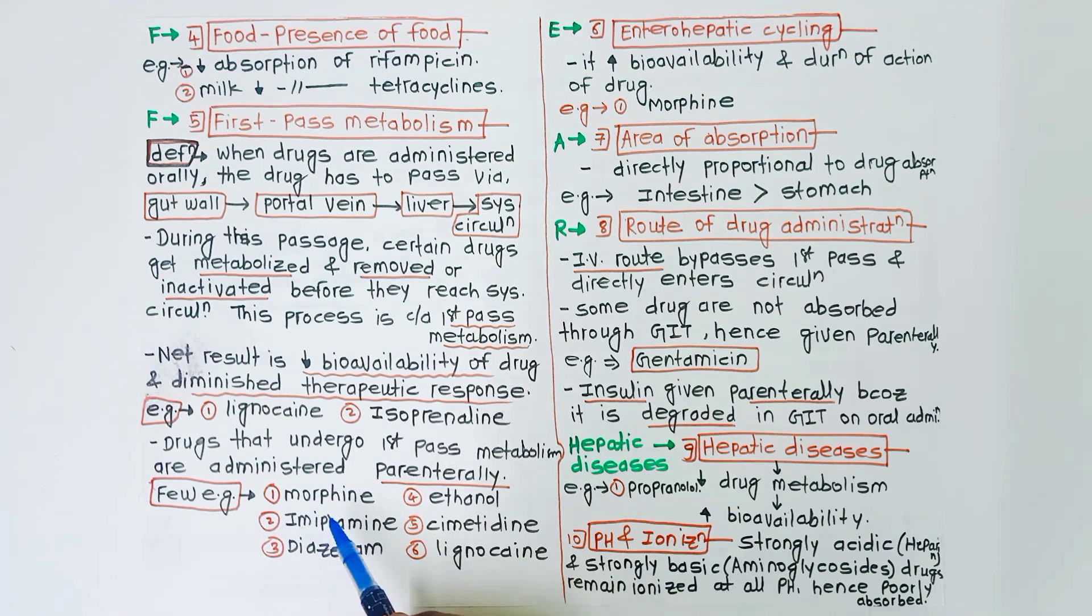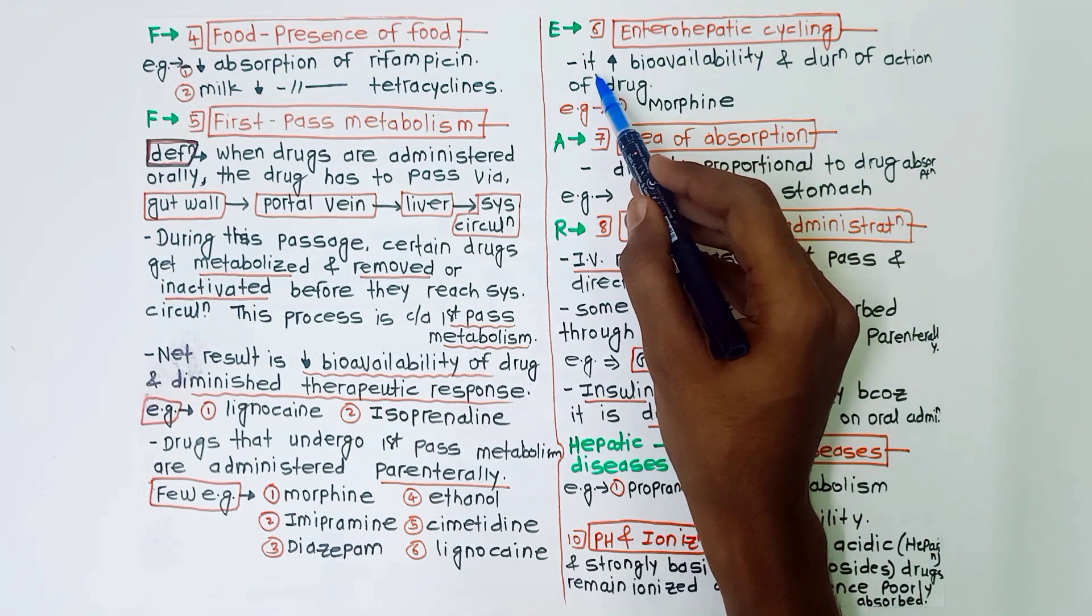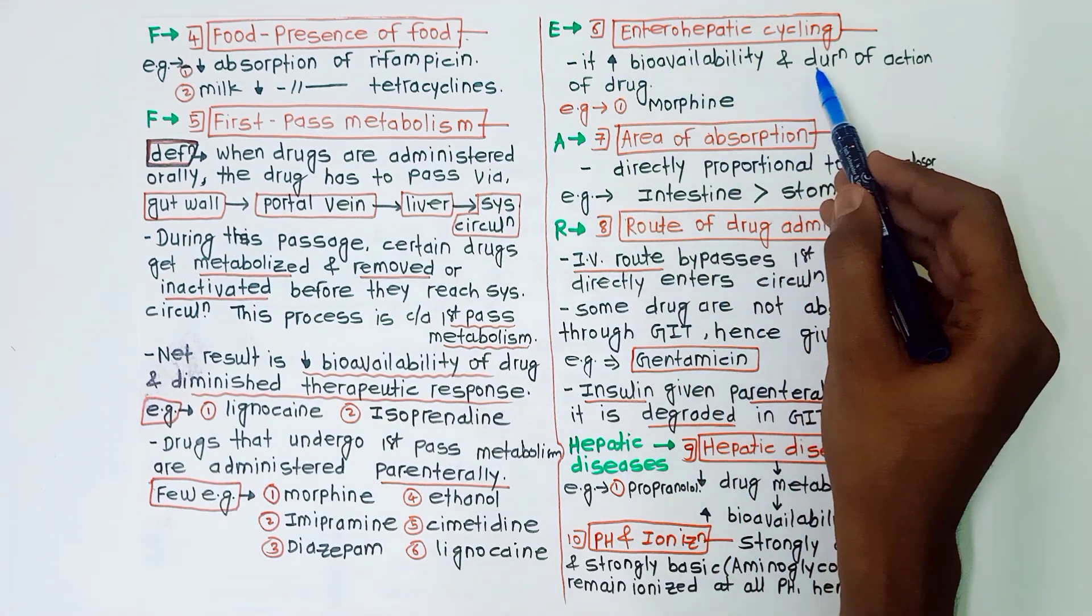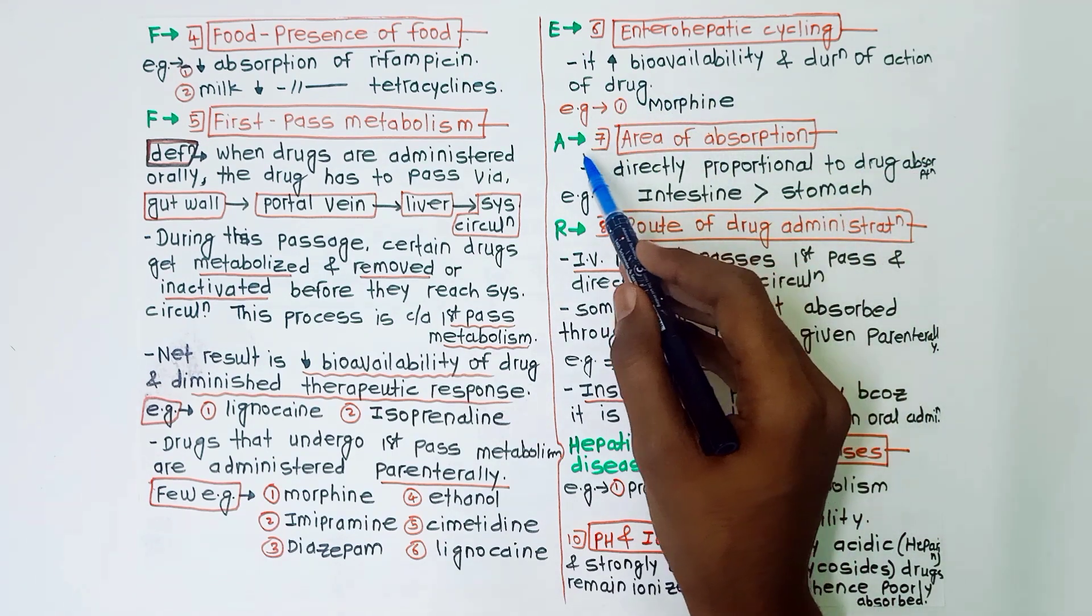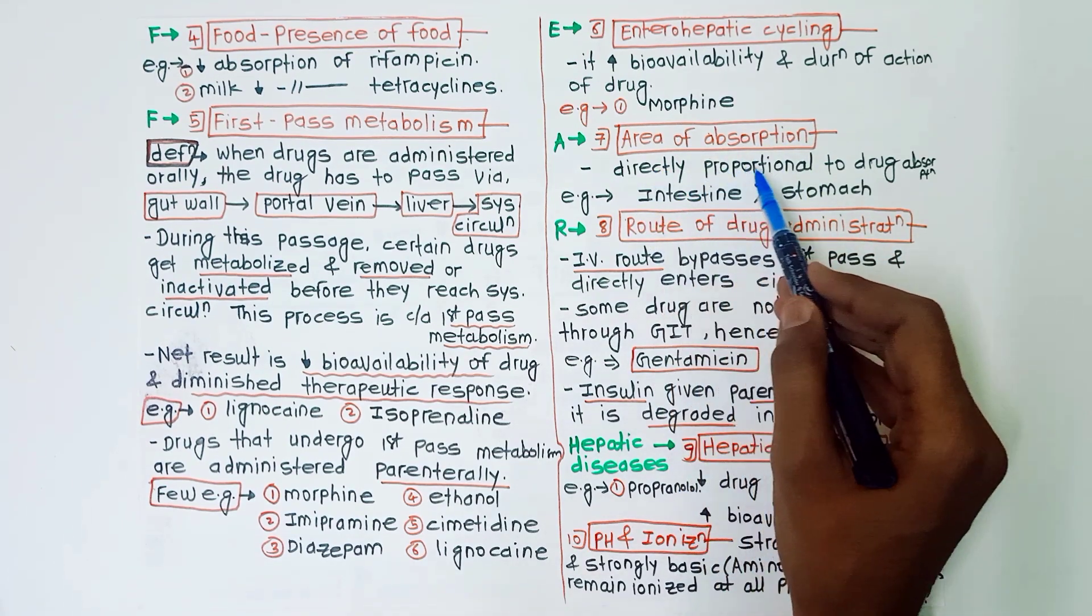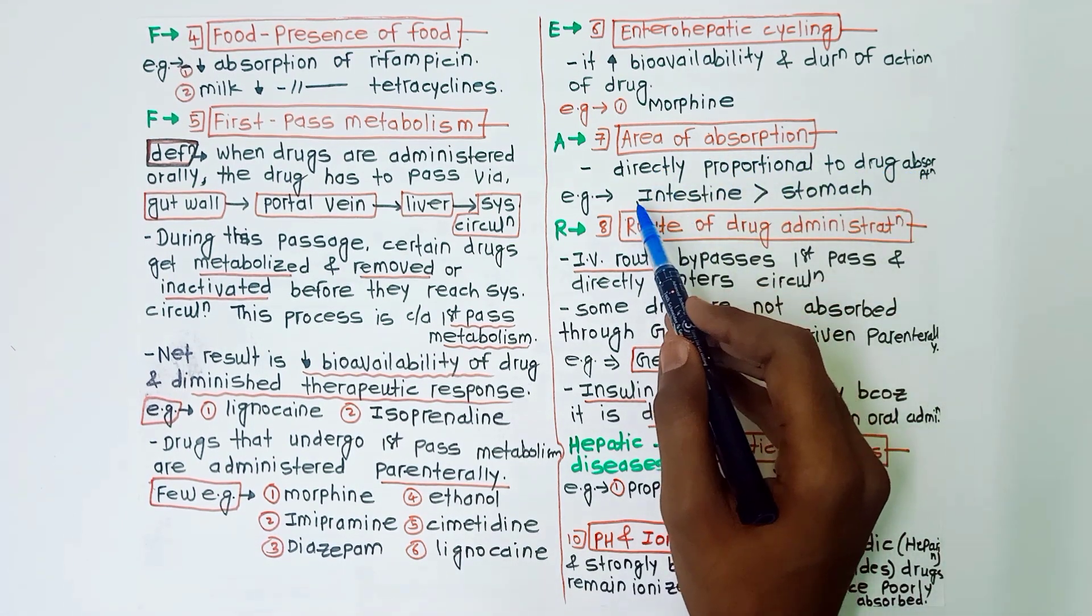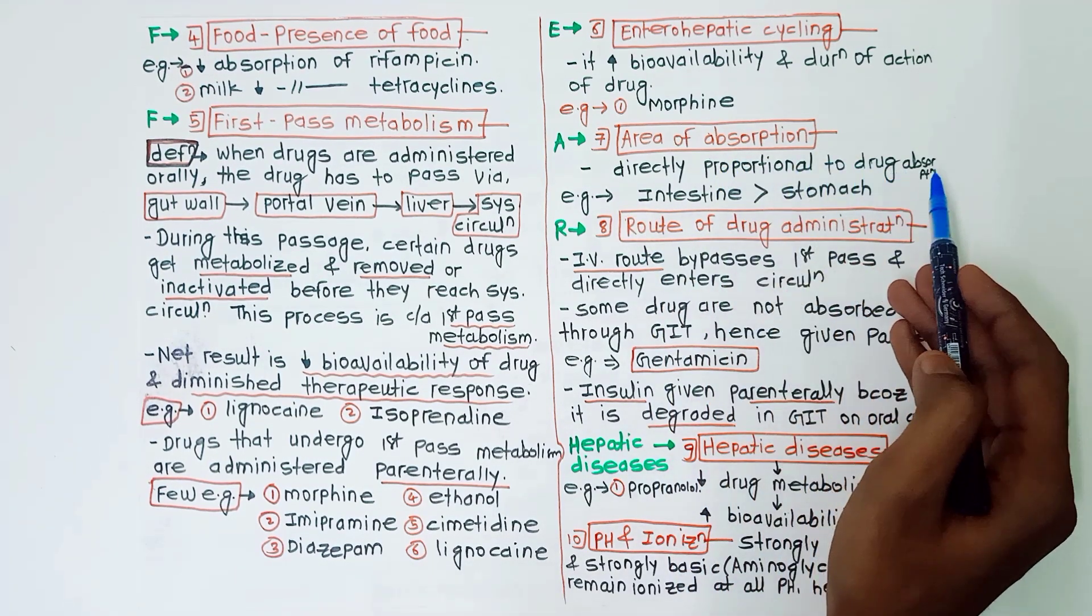Next, E for enterohepatic cycling. In this it increases bioavailability and duration of action of drug, example is morphine. Then A for area of absorption. It is directly proportional to the drug absorption. It means if the area of absorption is more, there is increased drug absorption. So in intestine, the drug absorption is more than in the stomach.